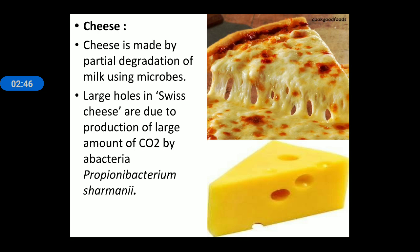Next is cheese. Cheese is also prepared by different types of microbes. A unique example is Swiss cheese. Swiss cheese has large holes inside it, and this cheese is produced by a bacteria named Propionibacterium shermani. These large holes are formed because during fermentation, large amounts of CO2 are produced inside the cheese.